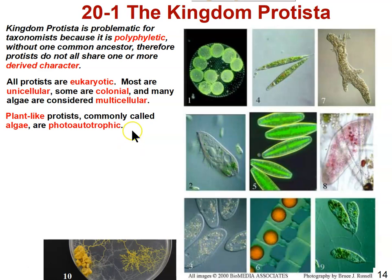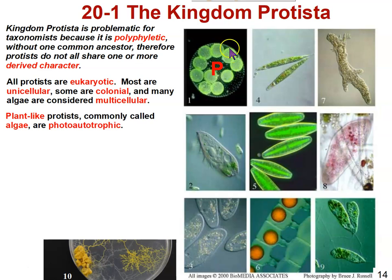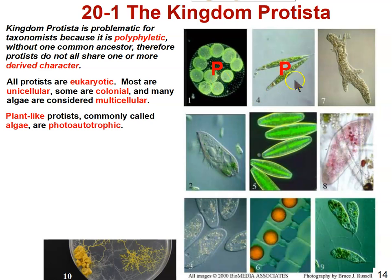Plant-like protists are classified in the Kingdom Protista mostly because they don't fit in the Kingdom Plantae. Looking at the organisms shown here, the plant-like protists include this colonial one — the whole big sphere is made up of little cells that are all very similar to each other. The smaller spheres on the inside are daughter colonies forming by asexual reproduction. You can tell it's a photoautotroph because it's green — it has chlorophyll.